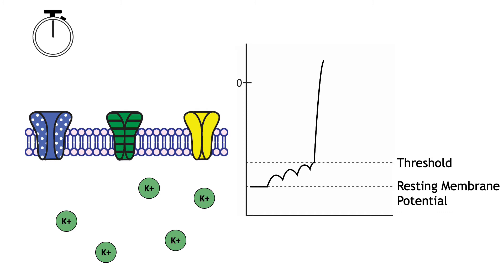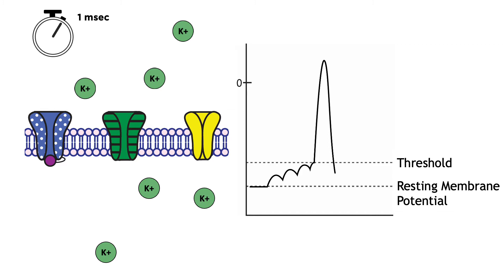After approximately one millisecond, the sodium channels inactivate. The channel becomes blocked, preventing ion flow. At the same time, the voltage-gated potassium channels open. This allows potassium to rush out of the cell because of the electrochemical gradients, taking its positive charge out of the cell and repolarizing the membrane potential, returning the cell's membrane potential back near rest.